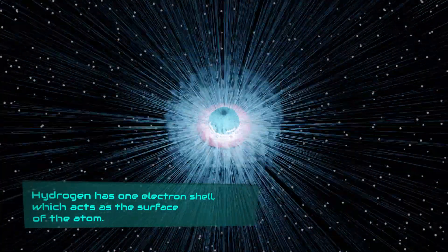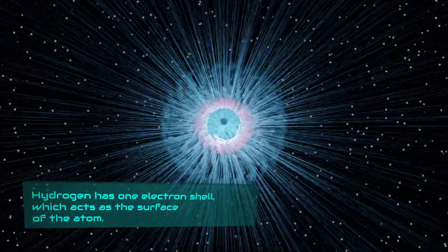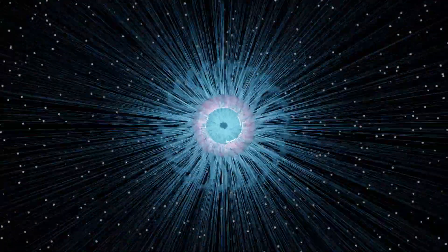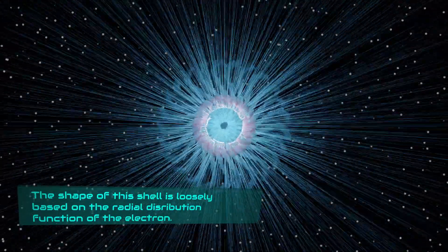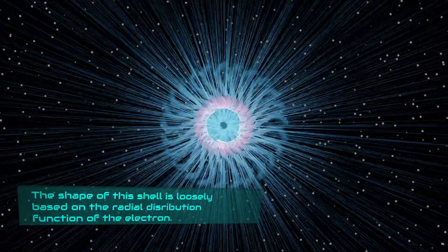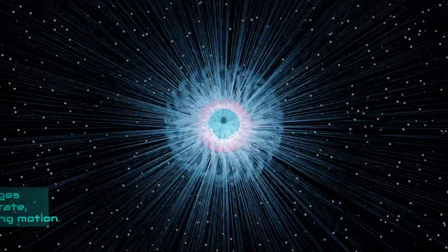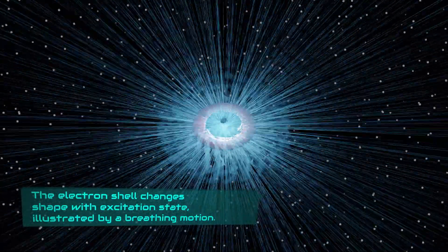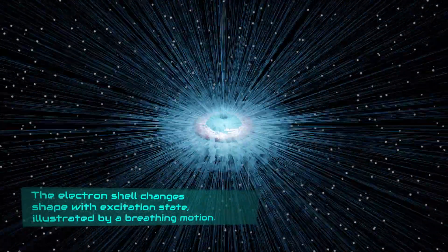Hydrogen has one electron shell which acts as the surface of the atom. The shape of this shell is loosely based on the radial distribution function of the electron. The electron shell changes shape with excitation state, illustrated by a breathing motion.